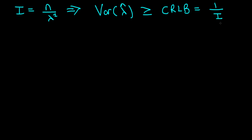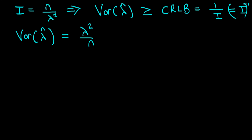There is a theorem holding under quite general circumstances which says that the variance of a maximum likelihood estimator lambda-hat is always greater than or equal to the Cramér-Rao lower bound, which equals one over the information matrix I — or I to the power minus one if I is an actual matrix. So our asymptotic variance of lambda-hat is approximately lambda squared over n. We substitute in the observed information, replacing lambda with lambda-hat.